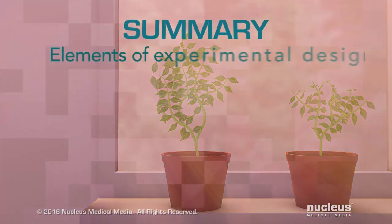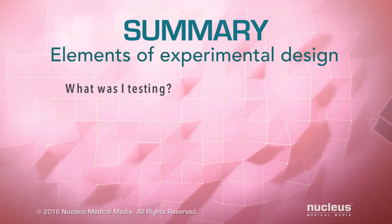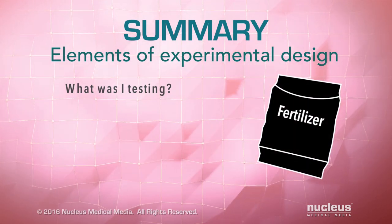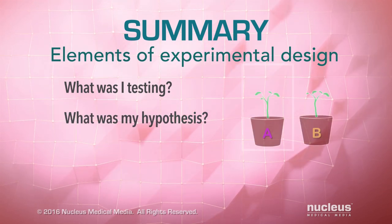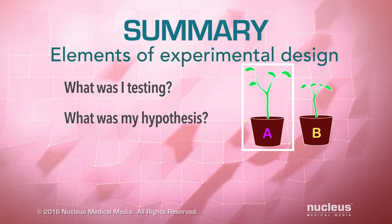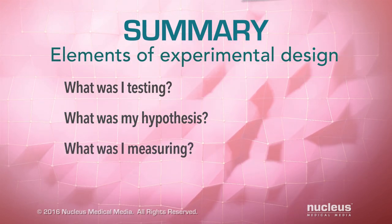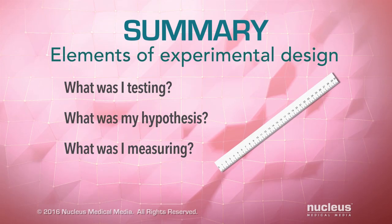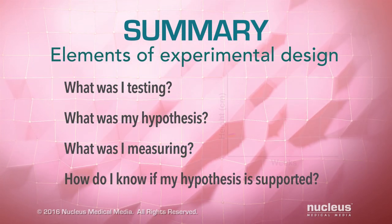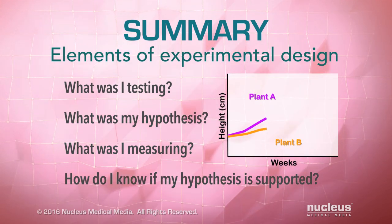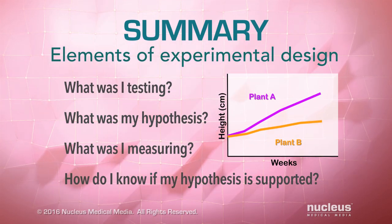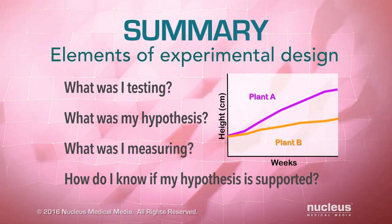Let's recap the elements of experimental design. What were you testing? You were testing to see whether or not fertilizer promotes plant growth. What was your hypothesis? The hypothesis was that the plant that got fertilizer would get bigger than the plant that didn't get fertilizer. What were you measuring? You measured the growth of both plants. If your hypothesis is true, you would have seen that the plant that got the fertilizer actually did get bigger than the plant that didn't get any fertilizer.